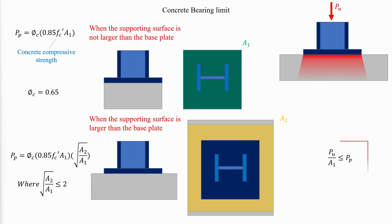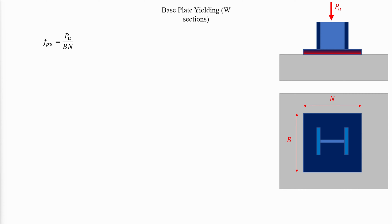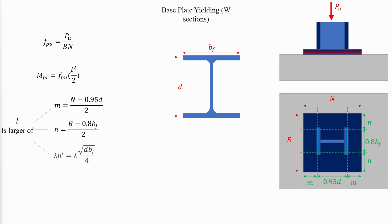The bearing stress on the concrete must not be greater than the available strength. For axially loaded base plates, the bearing stress under the base plate is assumed uniformly distributed. This bearing pressure causes bending in the base plate at the assumed critical sections, and also causes bending in the area between the column flanges. The required strength of the base plate can be determined where the critical base plate cantilever dimension L is the larger of M, N, and lambda N'.